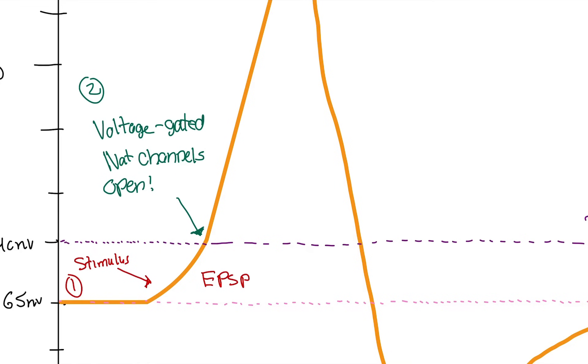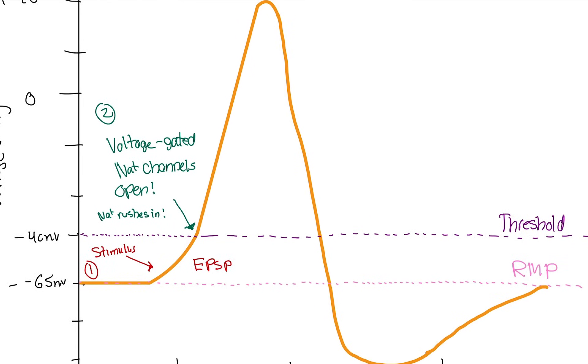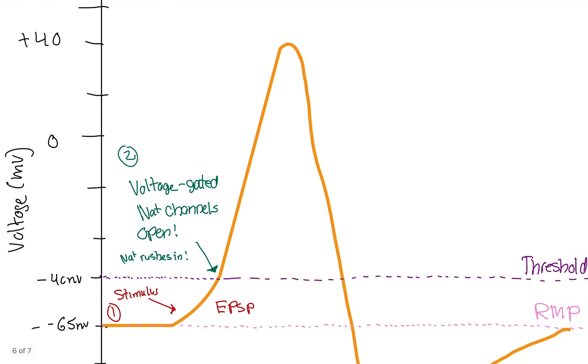Sodium is going to rush into the cell. So sodium rushes in. Sodium rushes into the cell. Sodium is positively charged, right? It has a positive sign on it. When sodium, which is positive, rushes into the cell, we're going to get more positive. And that is why we're going up in voltage. We're going from negative 40 all the way up to 40.